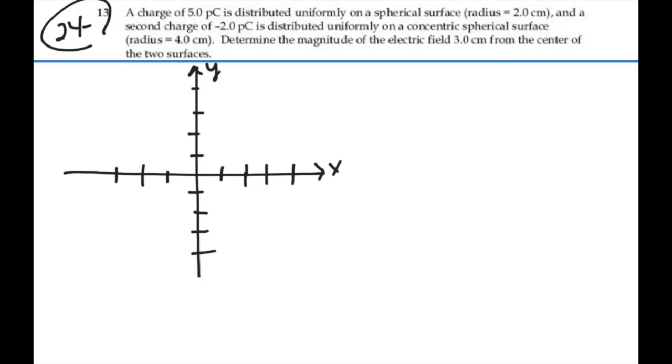So our first surface is radius of 2 centimeters. That's 1, 2, 3, 4. So we have a sphere that looks like this, at least in the cross-section.